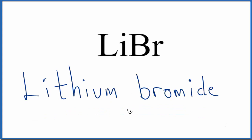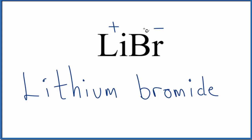If you were given this name and asked to write the formula for lithium bromide, you know you have lithium and then bromine. Lithium is a metal, bromine is a non-metal, so you need to balance the charges. Since lithium is in group 1, it has a 1+ ionic charge. Bromine is in group 17, sometimes called 7A, and has a 1− ionic charge. These two balance out, so we just have LiBr as the formula for lithium bromide.